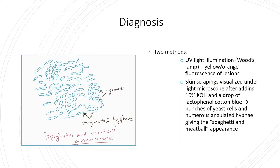There are two methods to diagnose Pityriasis Versicolor. One method is UV light illumination using the Wood's lamp in the dermatology clinic. With ultraviolet light exposure, you can see the lesions fluoresce — usually a yellow to orange fluorescence. So the Wood's lamp can be used to diagnose the condition.